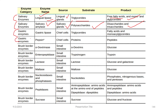The gastric enzymes include pepsin and gastric lipase, both produced by chief cells. Chief cells are involved in lipid digestion, breaking triglycerides into fatty acids and monoglycerides. Pepsinogen is produced by chief cells and activated by hydrochloric acid; once activated, pepsin can digest proteins into peptides.